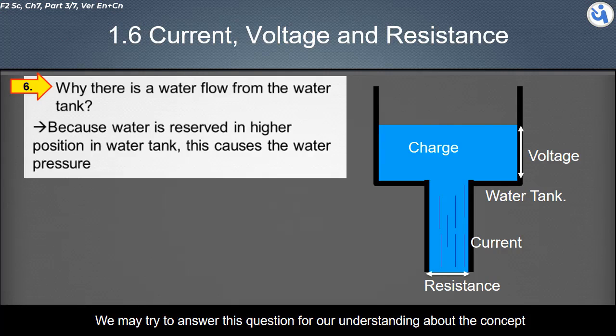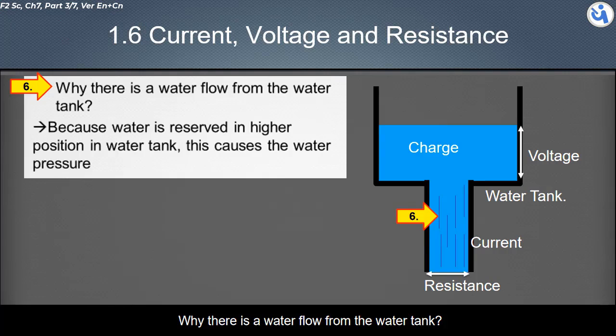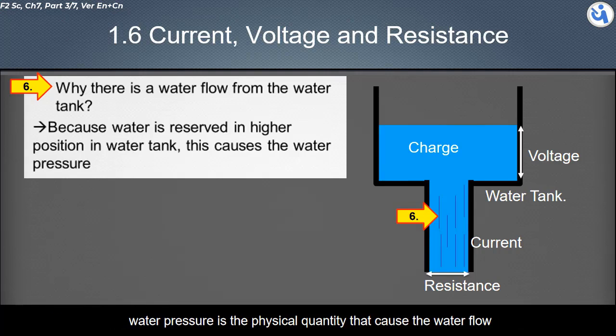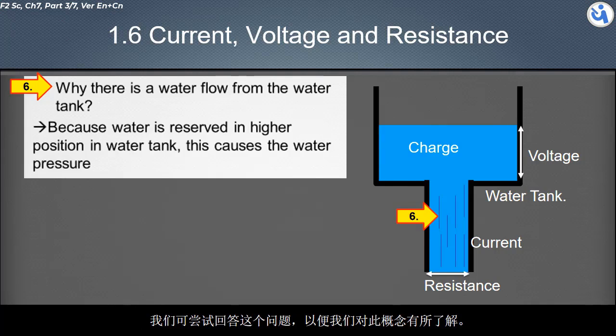Why is there a water flow from the water tank? Because water is reserved at higher position in water tank, this causes the water pressure. Water pressure is the physical quantity that causes the water flow.